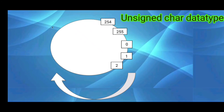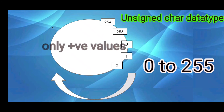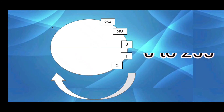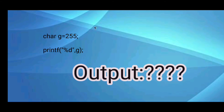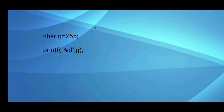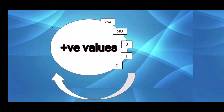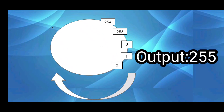Now, for unsigned char data type — there is no sign, so the whole memory is used to store only positive values, starting from 0 to 255. In this example, variable g holds 255. In positive values we can store up to 255, so this will print 255 to the output screen.